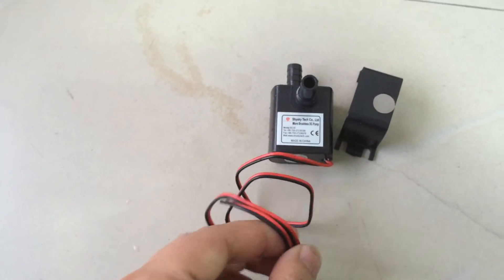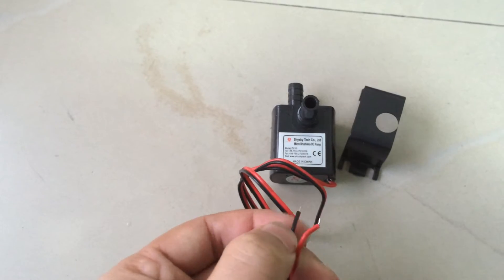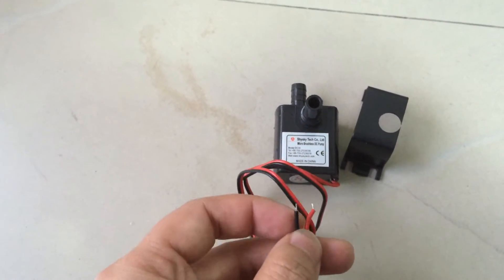The wire, about the polarity of the wire, the red wire is positive and the black wire is negative.